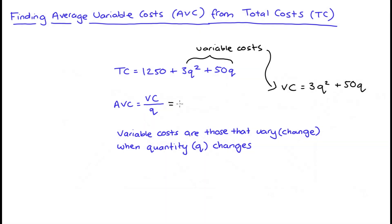We can then substitute this into our formula for average variable costs, and I get 3Q squared plus 50Q, all divided by Q, which is equal to, well, 3Q squared divided by Q is 3Q, and 50Q divided by Q is 50. So that's our average variable costs, 3Q plus 50.